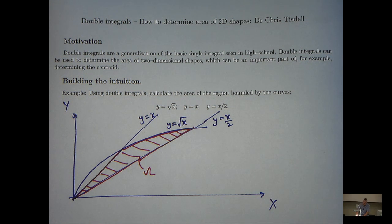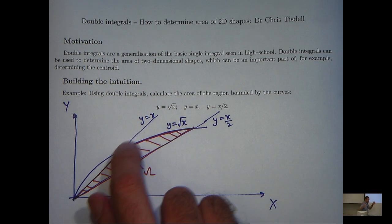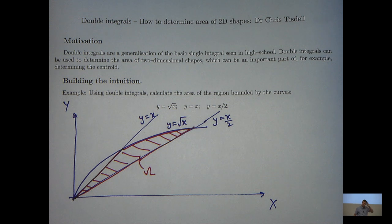Now you might be looking at this picture and going, well hang on, I can easily calculate the area in this region omega just by using single integrals. Yes, I agree with you, you can do that. However, one of the nice things about this particular example, you're asked to use double integrals and this forces you to think about the structure of this region.